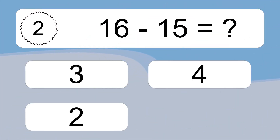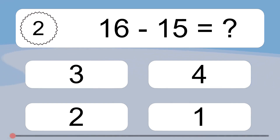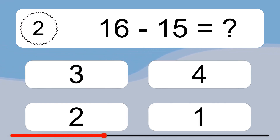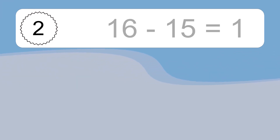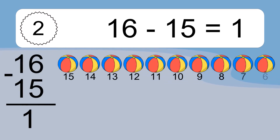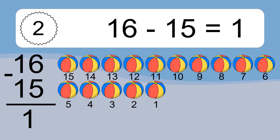16 minus 15 equals what? 16 minus 15 equals 1. Let's count it: 15, 14, 13, 12, 11, 10, 9, 8, 7, 6, 5, 4, 3, 2, 1.